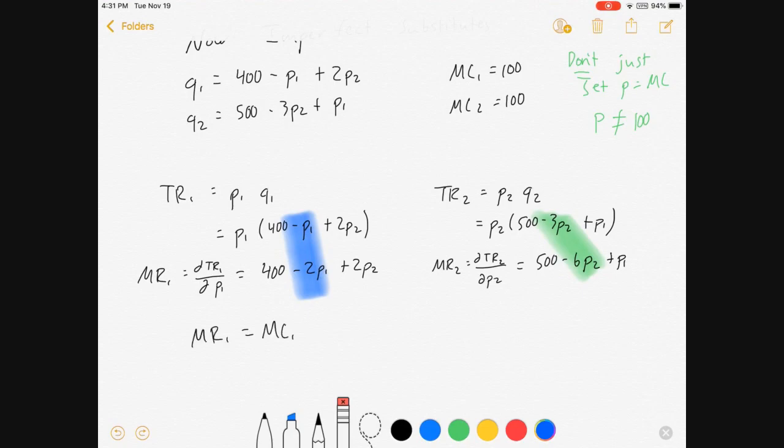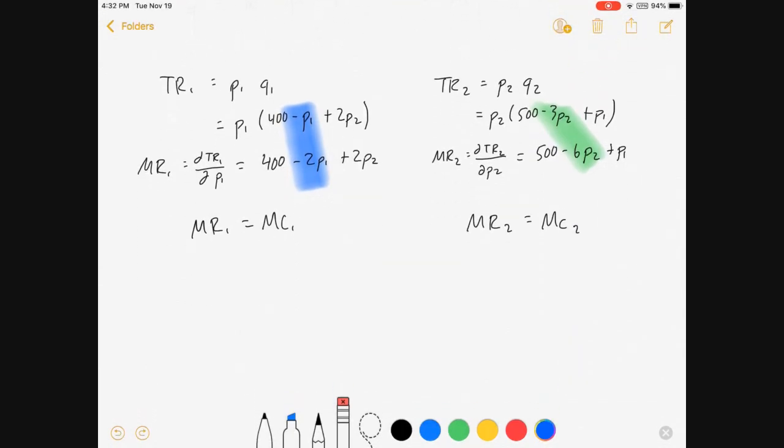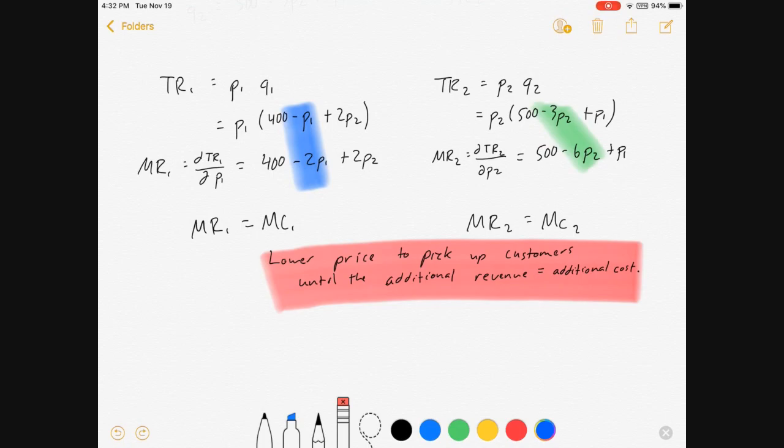So, with all this, we're still going to do something that's very familiar by now: set marginal revenue equal to marginal cost. Both firms will do it. Now, in the past, I've always treated this as a choosing quantity sort of equation, because our marginal revenue is change in total revenue over change in quantity. But now that it's change in total revenue over price, let's introduce some intuition.